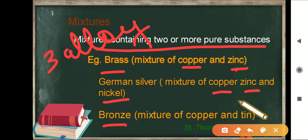To recap: the first alloy is brass, which contains a mixture of copper and zinc. German silver is also an alloy containing a mixture of copper, zinc, and nickel. The last one is bronze, which is a mixture of copper and zinc.